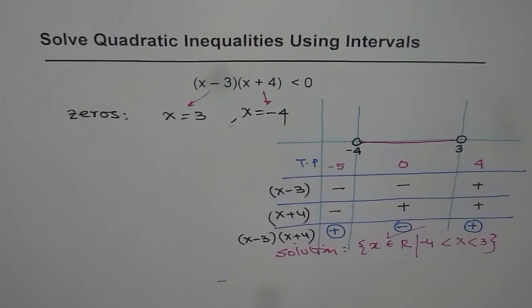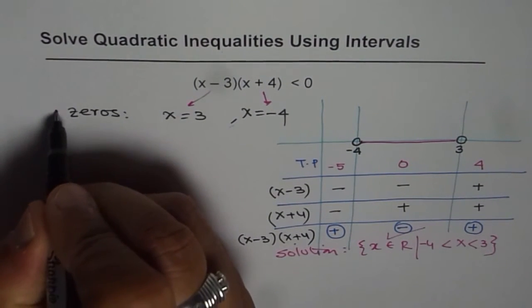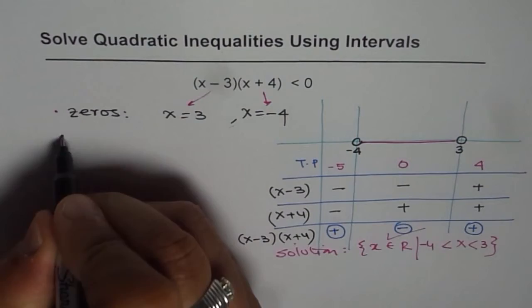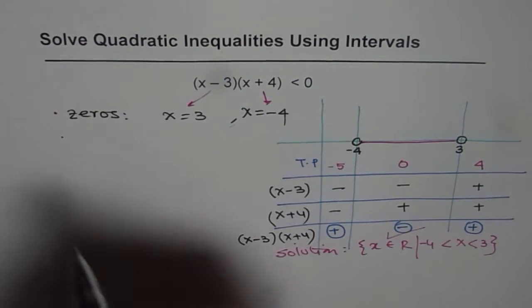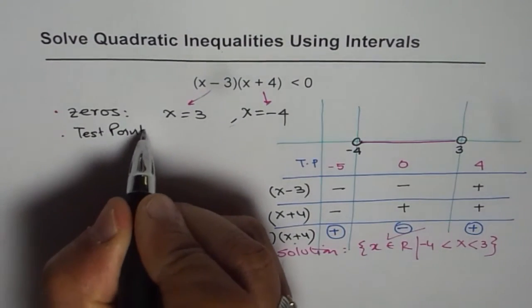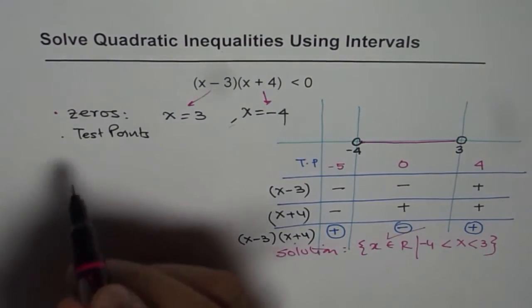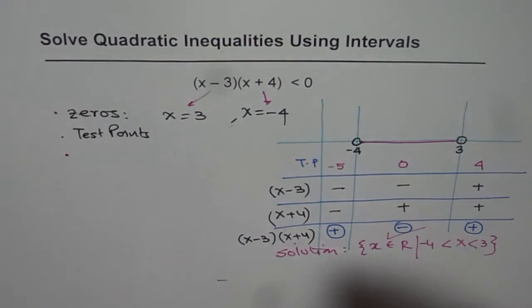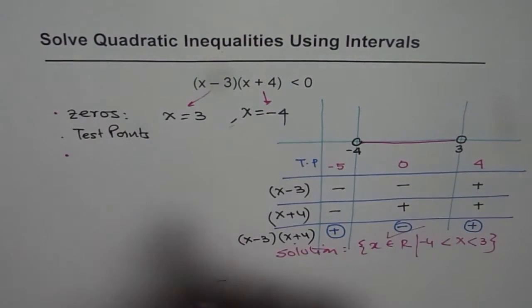So that is how we can get solution of quadratic inequality by analyzing the interval. So the strategy here is first find the zeros, then write down your test points, and then we need to check each factor at the test points.